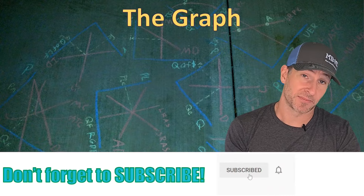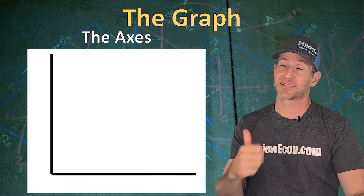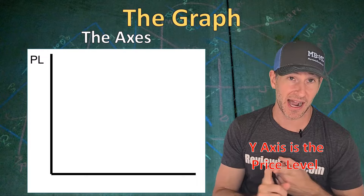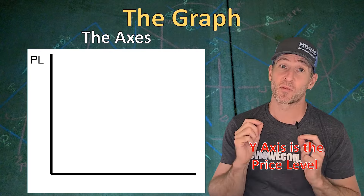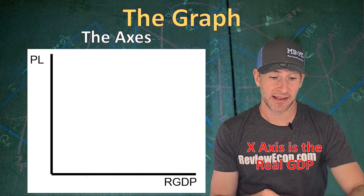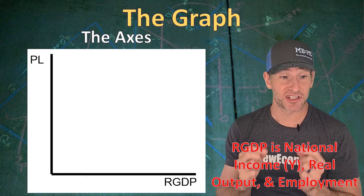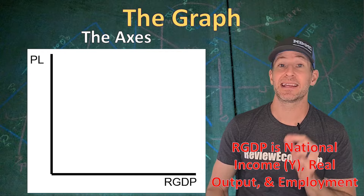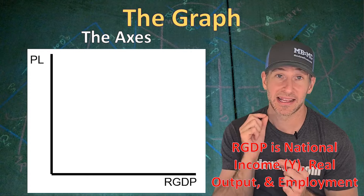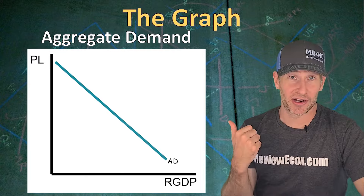While you should have already learned a little bit about the aggregate supply and aggregate demand curves, we're going to review the graph quickly. First we have our axes. The price level is measured by the CPI, the consumer price index, or the GDP deflator — these are average prices within the entire economy. On the x-axis we have real GDP, which is GDP adjusted for inflation. Real GDP is also known as national income, abbreviated as Y. It's also real output and employment, which is the opposite of unemployment. As real GDP increases, employment goes up and unemployment goes down.